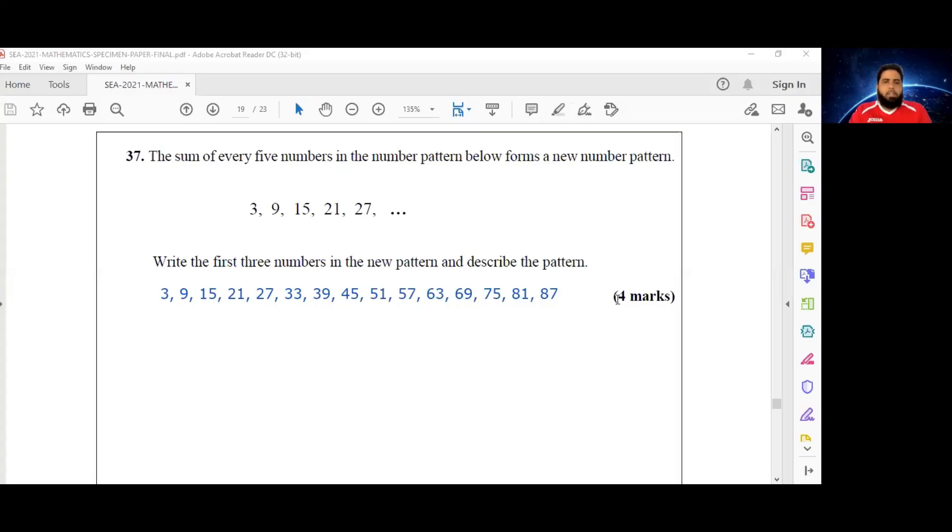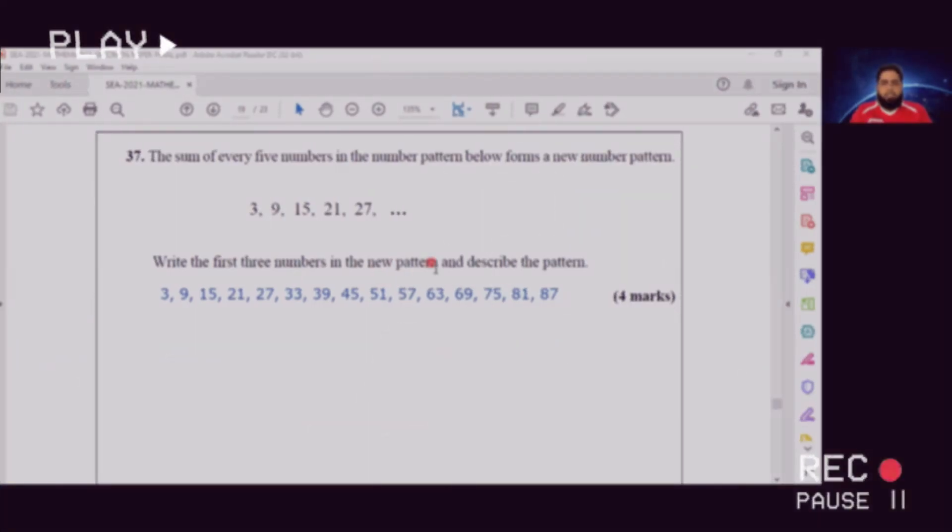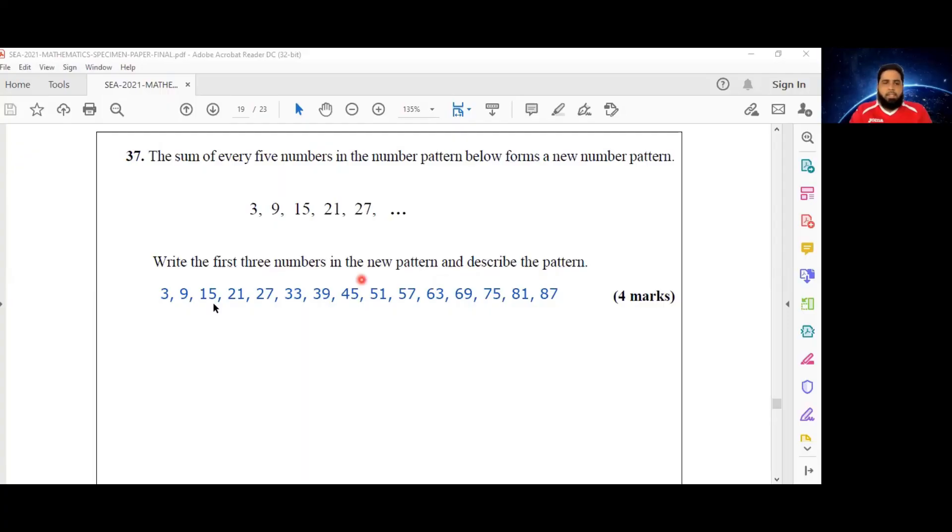A few moments later... So I've written out the first 15 terms in this pattern by continually adding 6 from 27 going forward. So 27 plus 6 is 33, plus 6 is 39, plus 6 is 45, plus 6 is 51, plus 6 is 57, plus 6 is 63, plus 6 is 75, plus 6 is 81, finally plus 6 is 87.